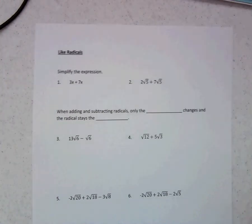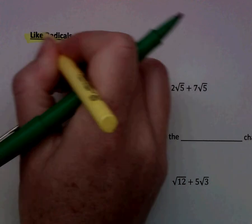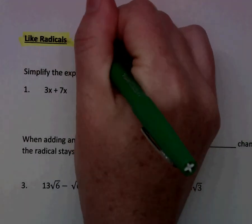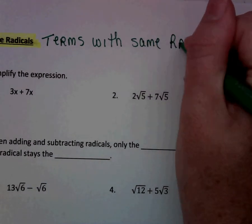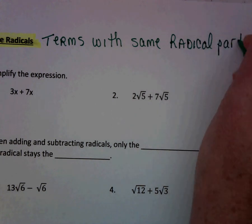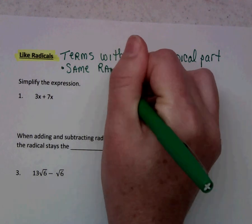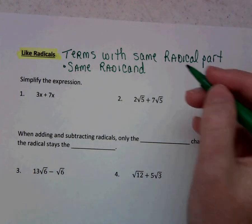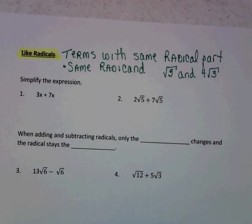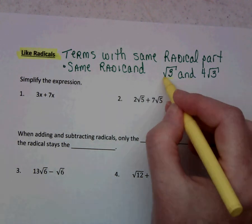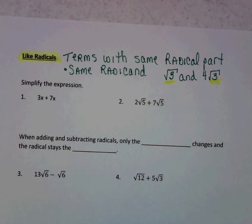So, like radicals. This is very similar to like terms. Like radicals just mean that they are terms with the same radical part. They have to both have the radical sign and they have to have the same radicand. For example, the square root of 3 and 4 times the square root of 3 would be considered like radicals because they both have that square root of 3 part. It doesn't matter that one has a 4 — it's only the radical part that we're looking at to see if it's the same and if we can put them together.